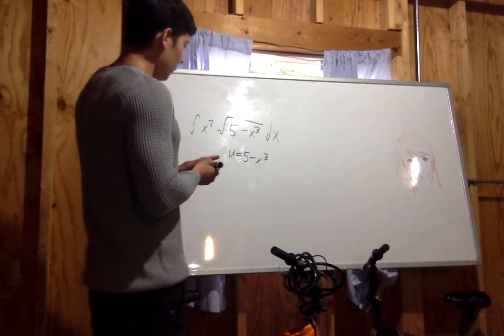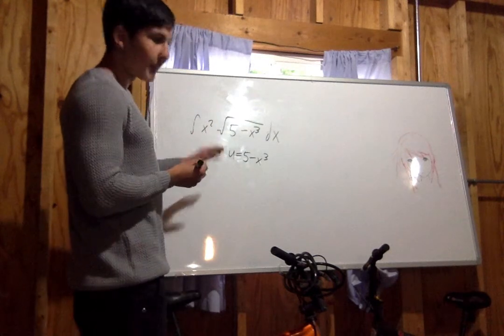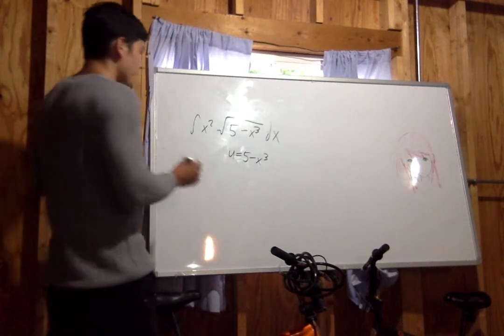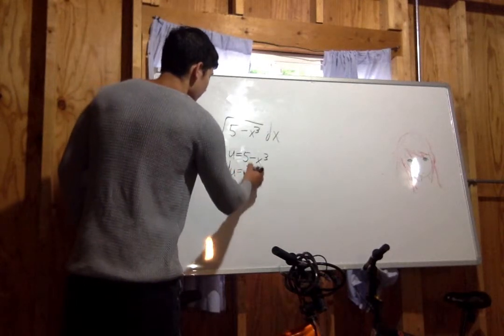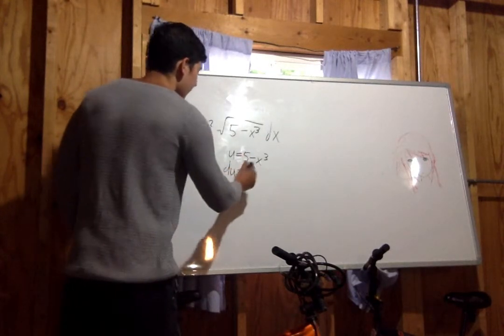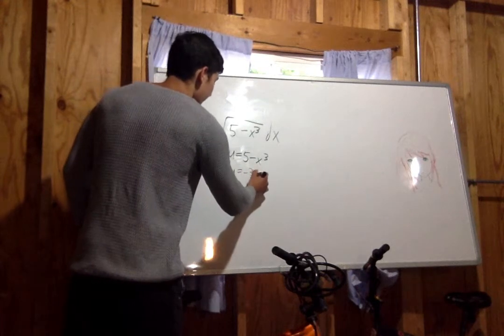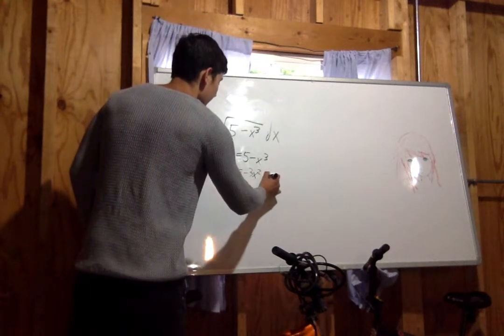Whenever you use u substitution, the next step is to take the derivative. The derivative is negative 3x squared dx, since the 5 goes away.